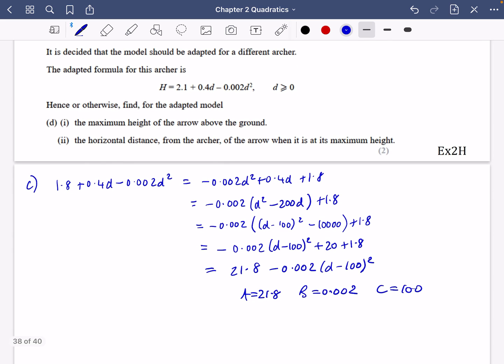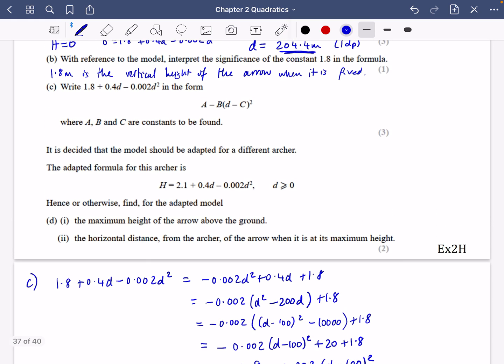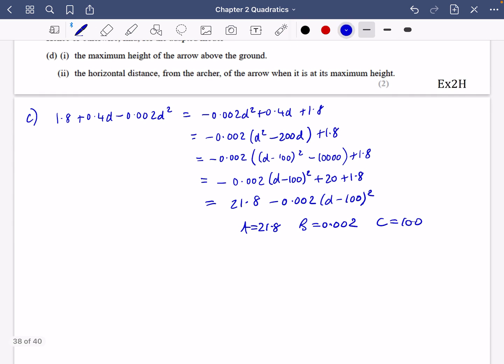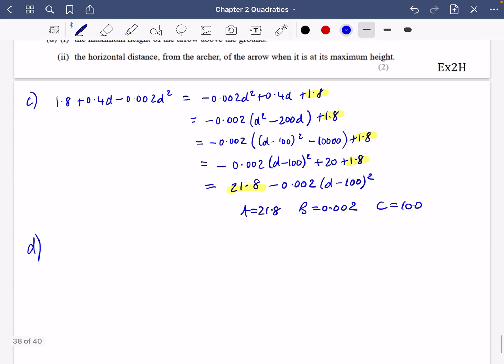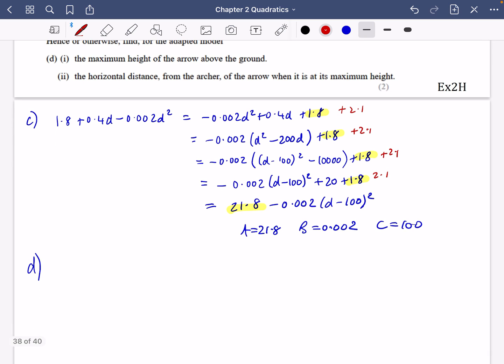It says it is decided that the model should be adapted for a different archer. The adapted formula for this archer is h = 2.1 + 0.4d - 0.002d². So everything is the same apart from this is 1.8 and this is 2.1. Hence, or otherwise, find for the adapted model the maximum height of the arrow above the ground and the horizontal distance from the archer when it reaches its maximum height. So the only thing that's different is instead of this being 1.8 all the way, it's actually 2.1. So if you imagine this thing changing, so instead of it being 1.8, it was 2.1 in all of these places.